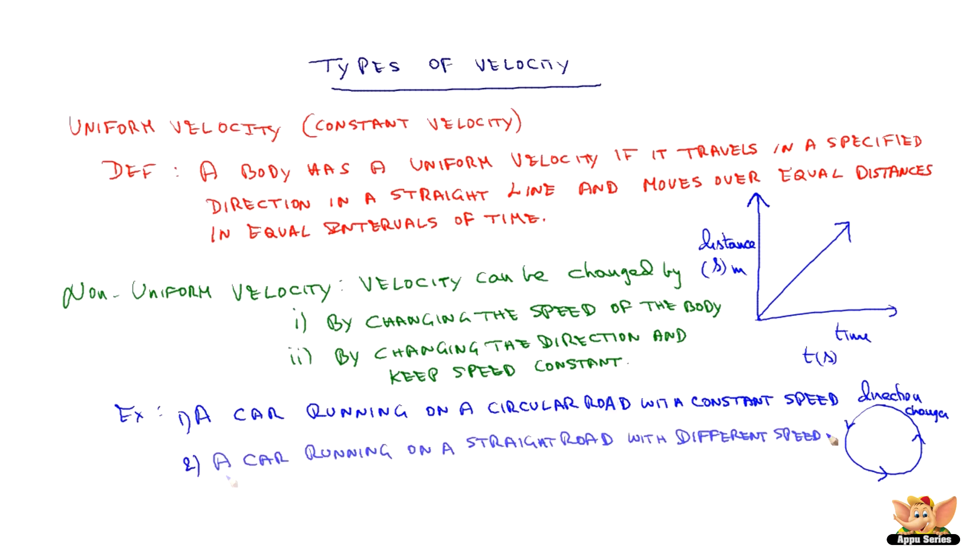Another example: a car running on a straight road with different speeds. Here the direction remains the same, speed is different but direction is the same. In the first instance, the direction changed but the speed is constant. In the second instance, the direction remains the same but speed of the car is changing.